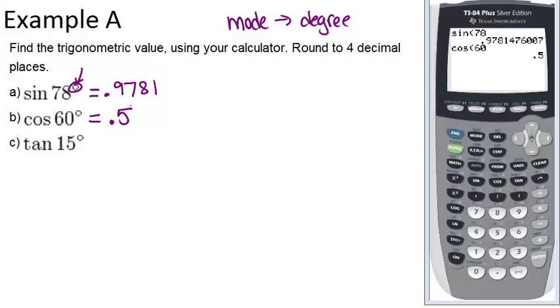Remember that 30, 60, 90 triangles have a special pattern, that's why this answer was so nice and neat. And lastly, tan tangent of 15, and we see that that's approximately 0.2679.